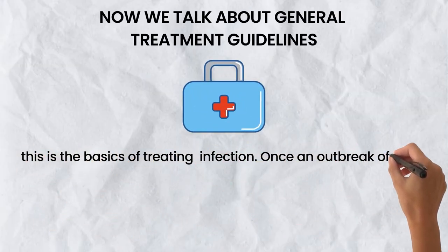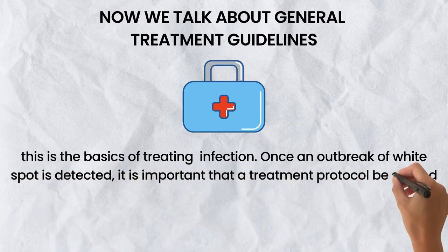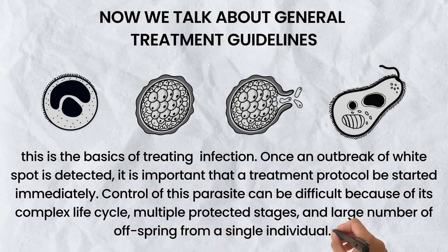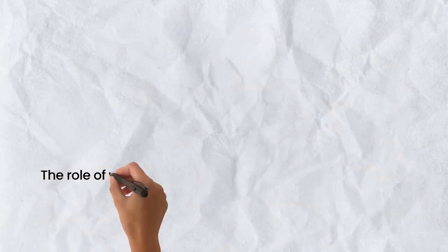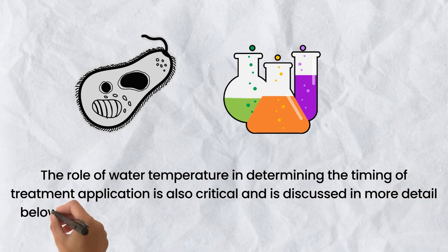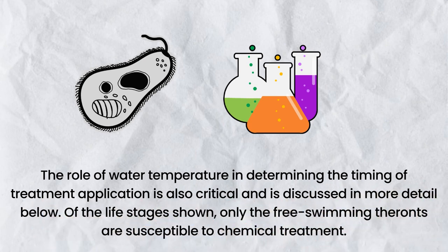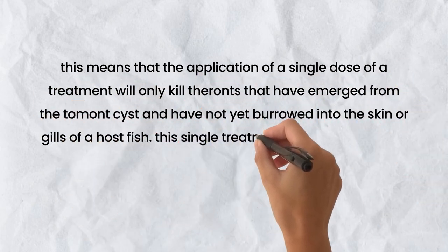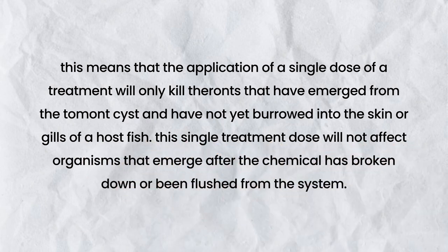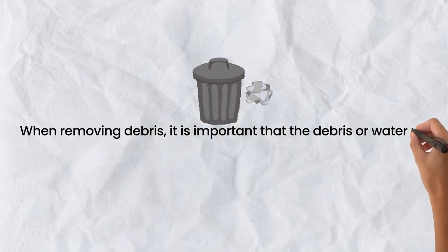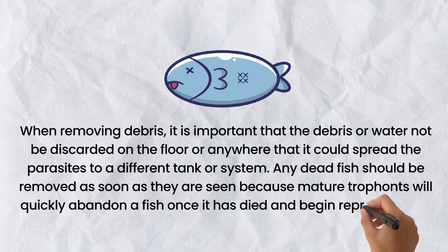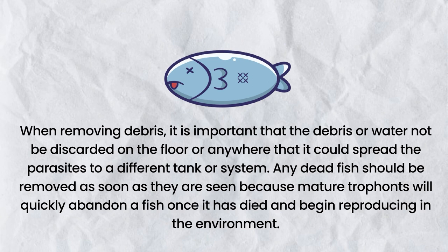Once an outbreak of white spot is detected, it is important that a treatment protocol be started immediately. Control of this parasite can be difficult because of its complex life cycle, multiple protected stages, and large number of offspring from a single individual. Only the free-swimming theronts are susceptible to chemical treatment. A single dose will only kill theronts that have emerged from the cyst and have not yet burrowed into the skin or gills. When removing debris, ensure it is not discarded anywhere it could spread parasites to a different tank. Any dead fish should be removed immediately, as mature trophonts will quickly abandon a dead fish and begin reproducing in the environment.